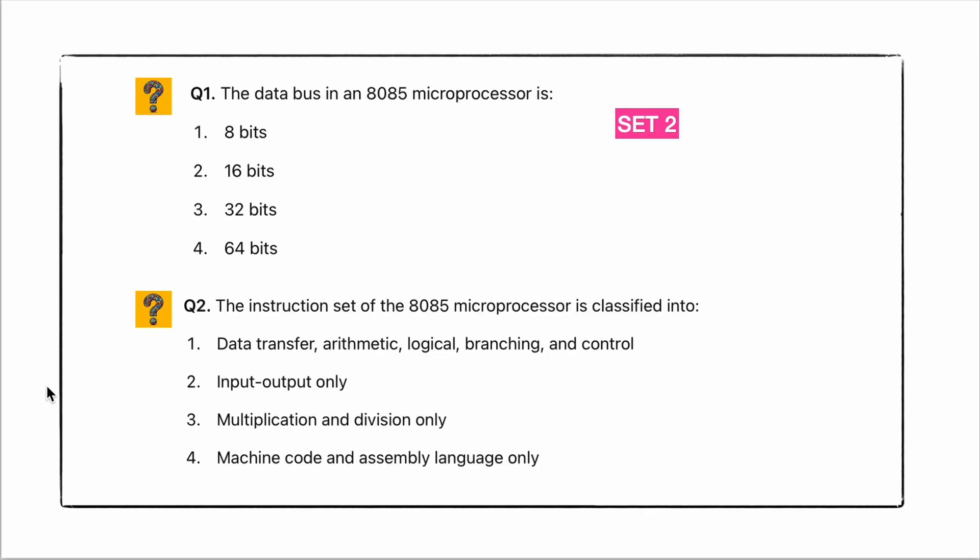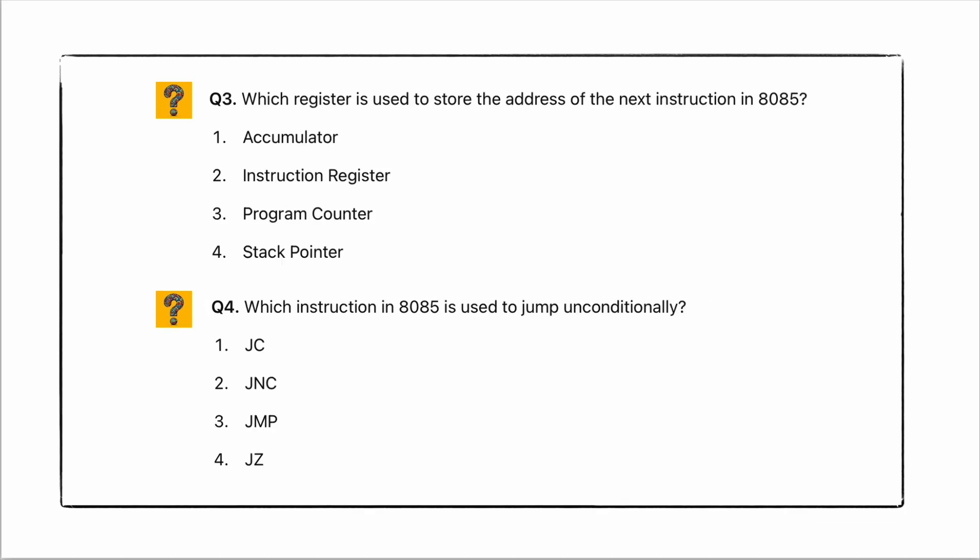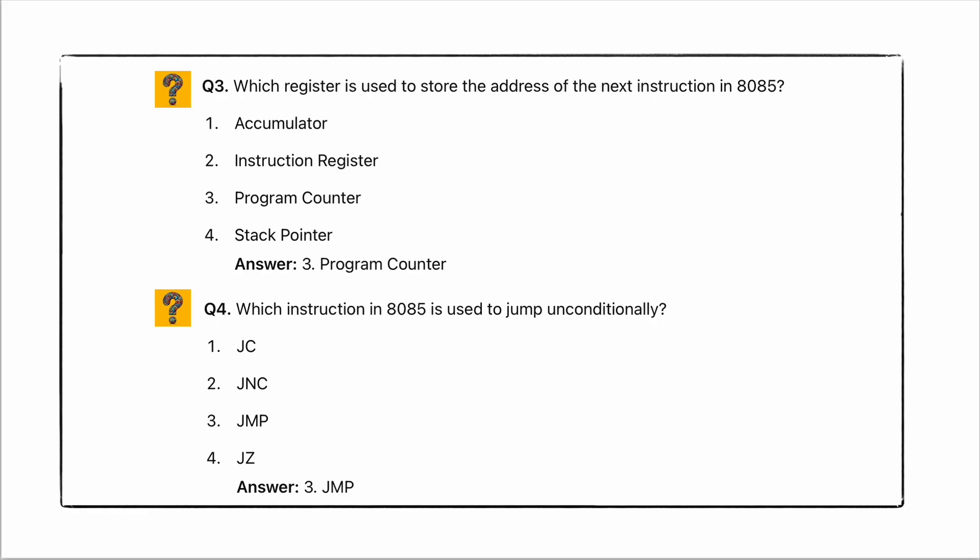The 8085 microprocessor memory classification — the 8085 microprocessor is classified into categories. Coming to the answer: which register is used to store the address of the next instruction in 8085? Which instruction in 8085 is used to jump unconditionally? Coming to the answer: the address of the next instruction in 8085 is stored in the program counter.